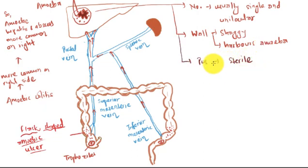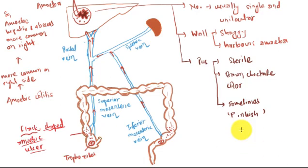Talking about the pus, it is sterile. The sterile nature of the pus is because the amoeba is present in the wall, not in the pus. It is brown chocolate color and sometimes it is pinkish. Classically, it is described as anchovy sauce appearance.